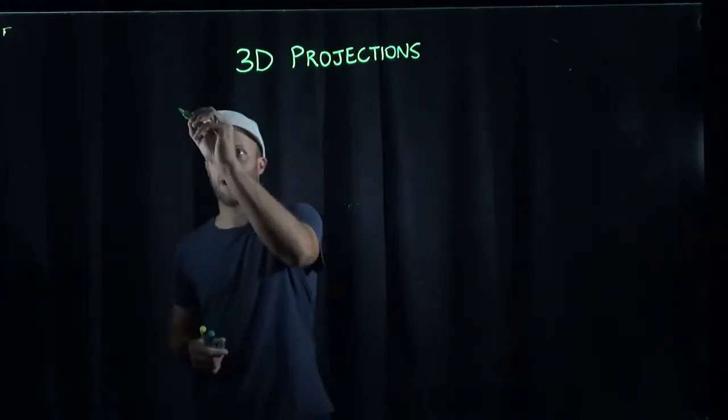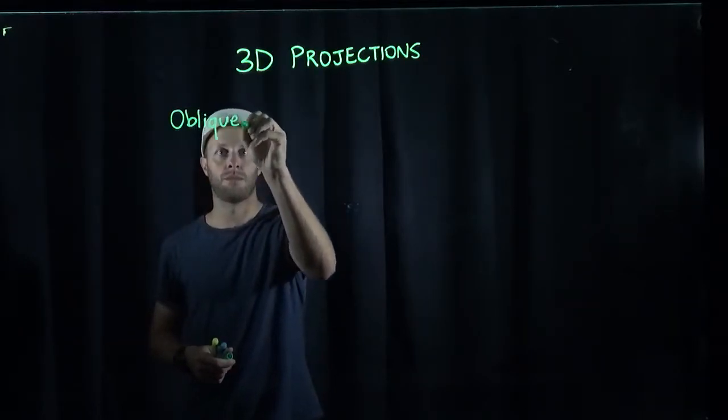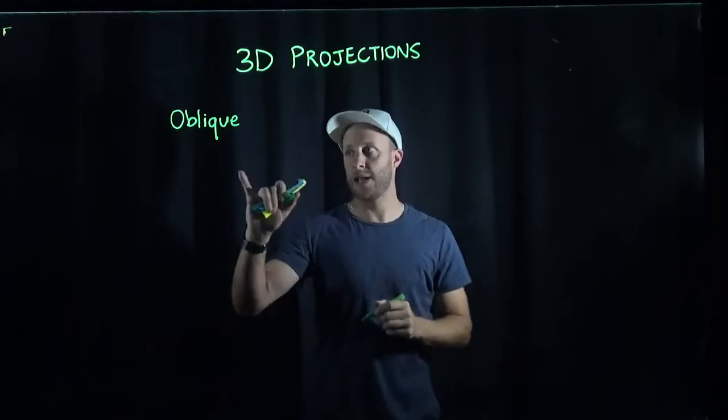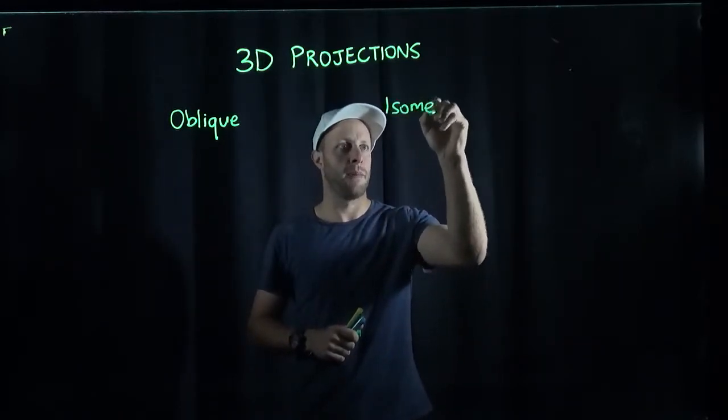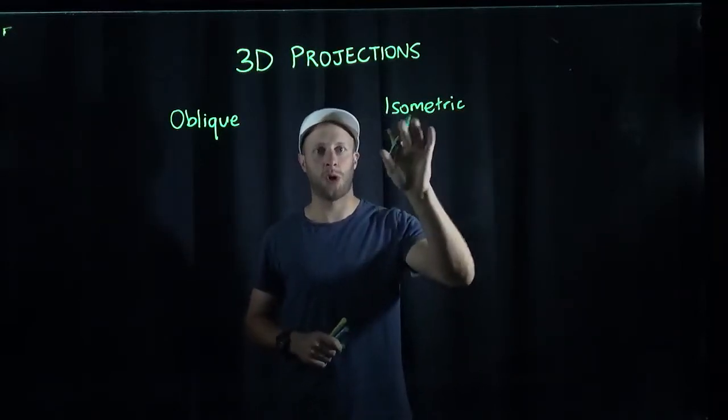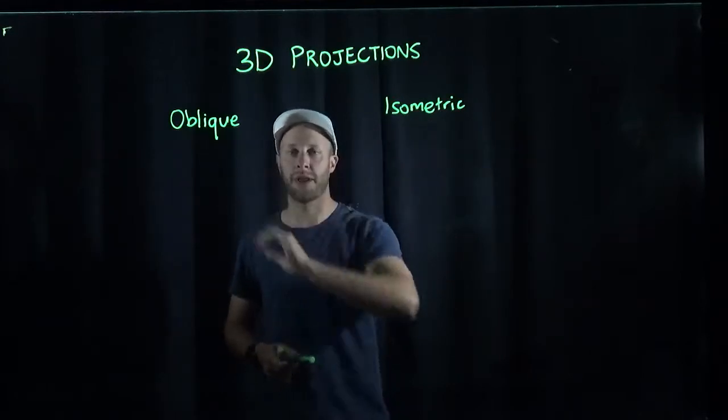The first one is called an oblique. This is not as common as the other one which is called an isometric. So this is the most common that we use in technical drawing. And it's a little harder to draw than an oblique.